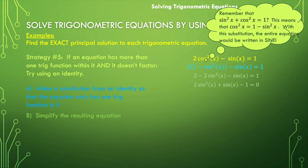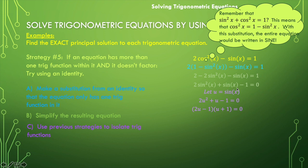Let u equal sine of x. I can rewrite this as the quadratic: two u squared plus u minus one is equal to zero. We factor this as two u minus one times u plus one is equal to zero. Now back substitute sine of x wherever you see u. So two times the sine of x minus one is equal to zero, and sine of x plus one is equal to zero. Set each factor equal to zero and isolate the trig function by adding one and dividing by two for the first, and subtracting one for the second.